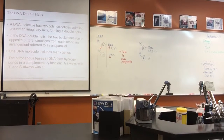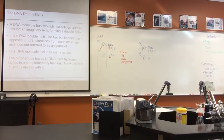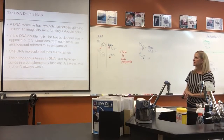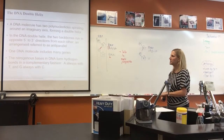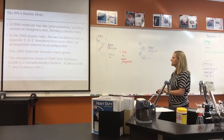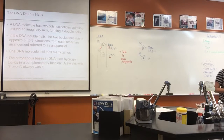DNA's structure is a double helix — a DNA molecule has two polynucleotides spiraling around an imaginary axis. In the DNA double helix, the two backbones run in opposite 5-to-3-prime directions, called anti-parallel. One DNA molecule includes many genes.